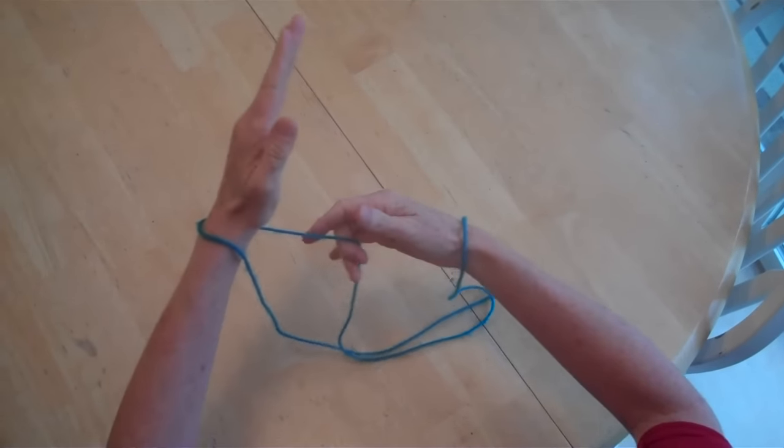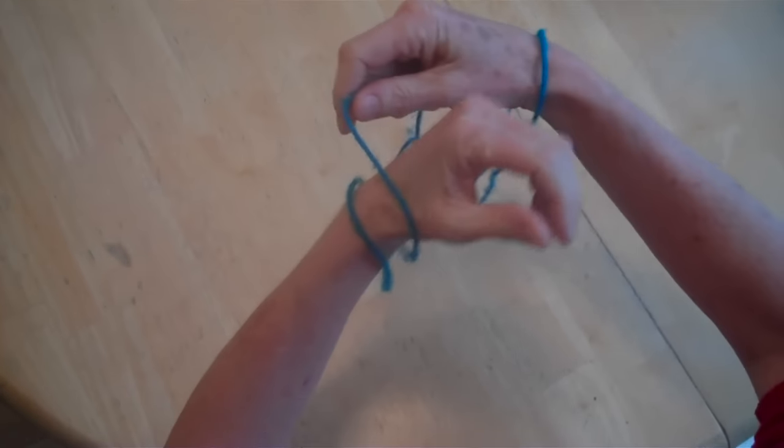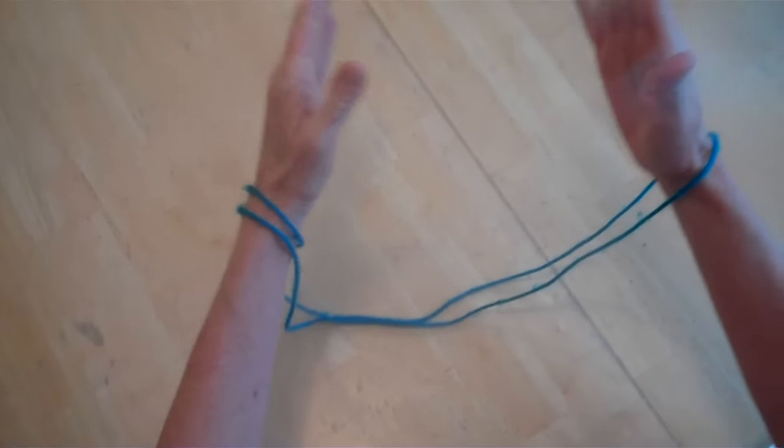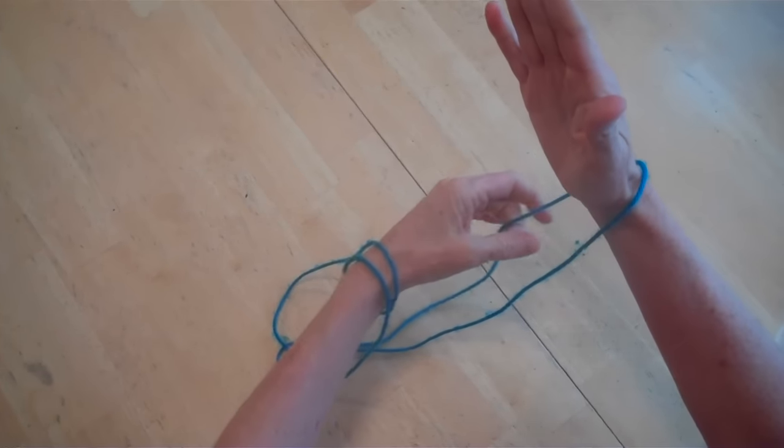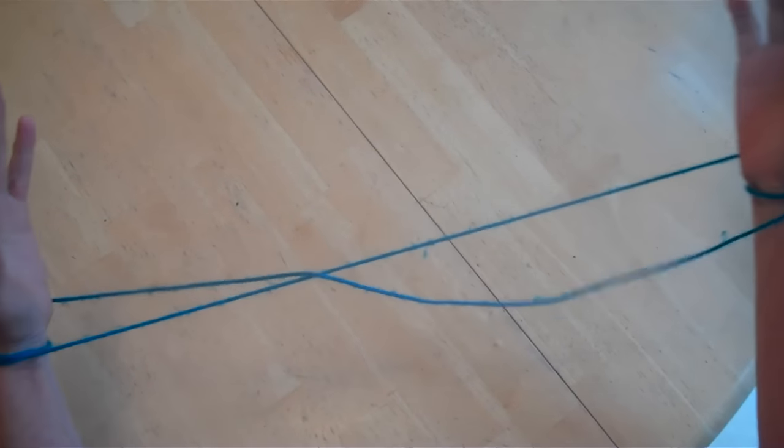Next, take the string on the back and wrap it around your left wrist one time. Do the same on the other hand. String on the back, wrap it around your wrist one time.